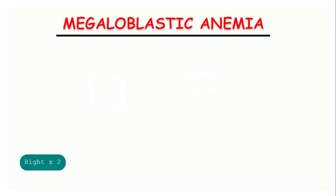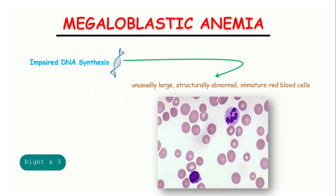In megaloblastic anemia, there is an impaired DNA synthesis which results in unusually large, structurally abnormal, immature red blood cells. Other cells derived from the myeloid stem cells are also abnormal. A bone marrow analysis reveals hyperplasia and the precursor erythroid and myeloid cells are large and bizarre in appearance. However, many of these abnormal cells are destroyed within the marrow, so the mature cells that do leave the marrow are actually fewer in number. Thus, pancytopenia can develop.